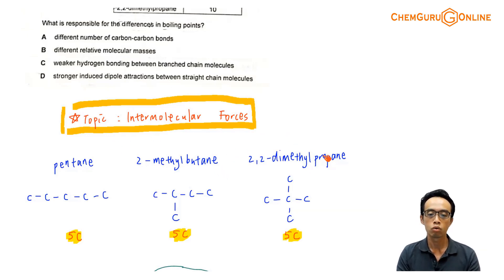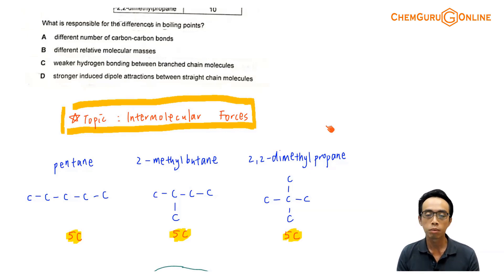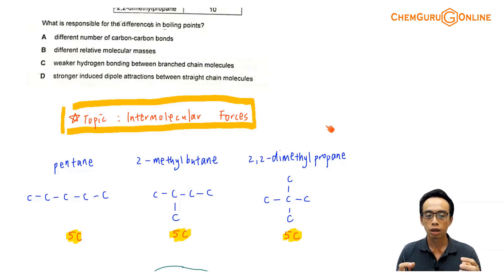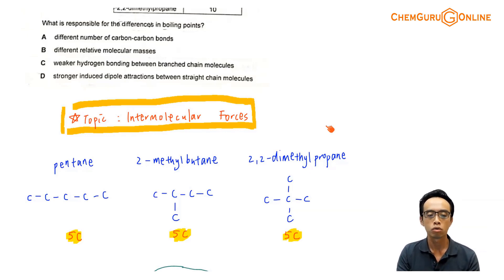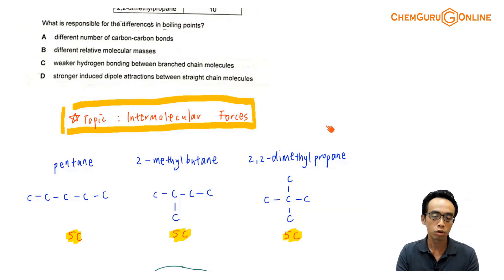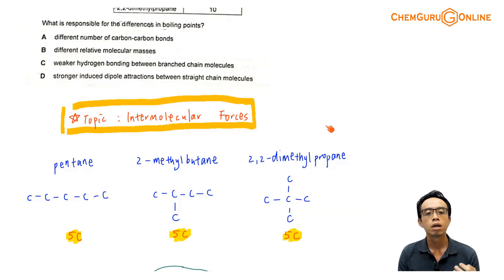Pentane, 2-methylbutane, and 2,2-dimethylpropane are all non-polar species — they are alkanes. The carbon-carbon bond is non-polar and the carbon-hydrogen bond is also non-polar, so the entire molecule will be non-polar. Therefore, the dominant intermolecular interaction for each of them should be non-polar interactions.